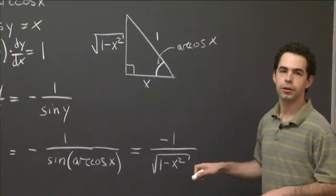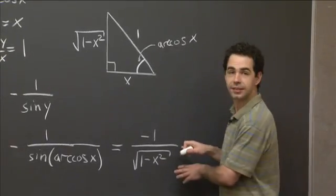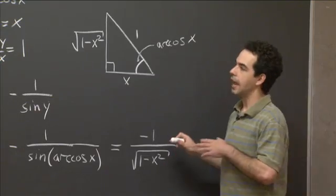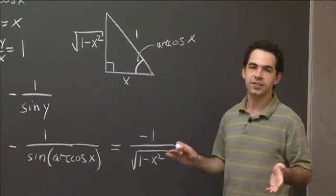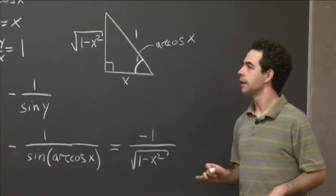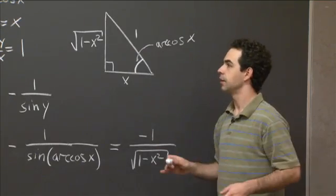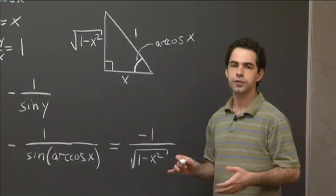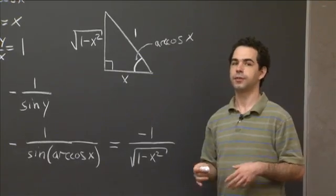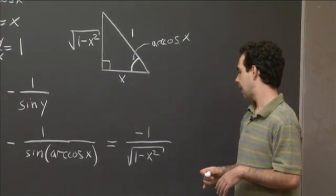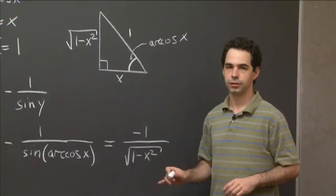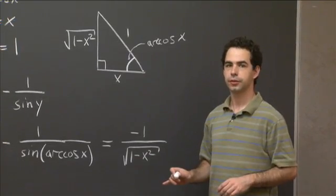So if you remember what the derivative of arc sine of x was, you'll notice that this is a very similar looking function. And this is just because cosine and sine are very similar looking functions. So, in fact, the graph of arc cosine is just a reflection of the graph of arc sine.